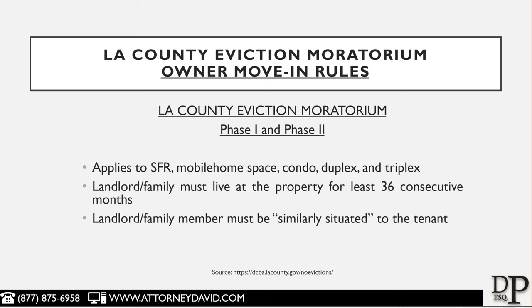The landlord or family member must be similarly situated to the tenant, and the county provides a few examples of what similarly situated means. One example is that if the tenant or the tenant's household member is at least 62 years of age or older, then the landlord or landlord's family member also has to be at least 62 years of age. Another example is that if the tenant or a tenant's household member is a person with a disability and has a physical or mental impairment that limits one or more of the person's major life activities, then the landlord or family member of the landlord must also have some type of a disability — again, going to the fact that the landlord or family member needs to be similarly situated.